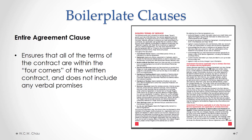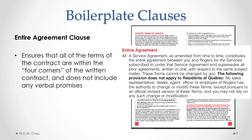A common boilerplate clause that almost every contract has is an entire agreement clause. Such a clause ensures that all of the terms of the contract are within the so-called four corners of the written contract and does not include any verbal promises that have not been put into writing in the contract itself. The Rogers contract also has an entire agreement clause, and that's in Section 43.